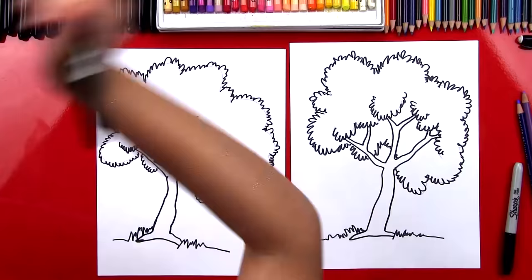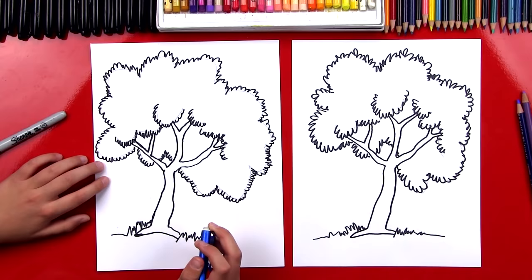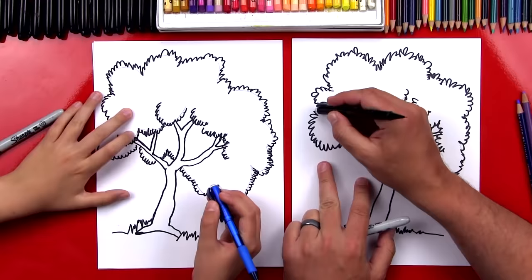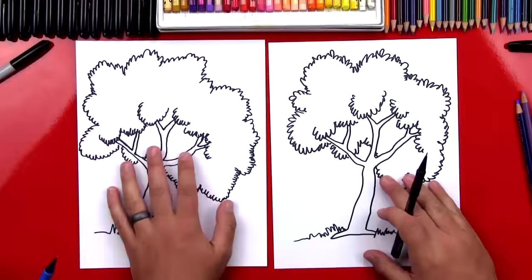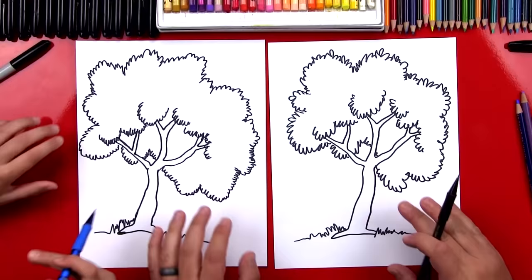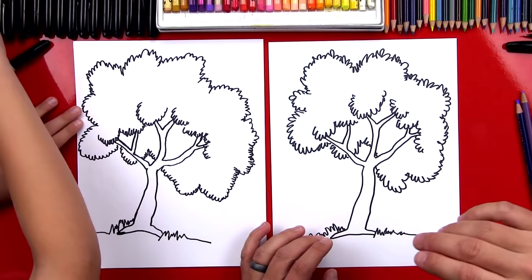We finished our leaves. It looks really cool. I'm sure your guys' drawings at home look awesome too. Now we're going to switch back to our pencil. And we're going to use the eraser to erase all of those guidelines that we created at the very beginning. All right. We finished erasing all of the guidelines around our tree. We can put our pencil off to the side. And what should we do next? Color it.